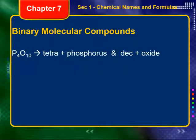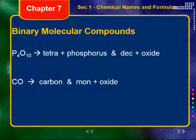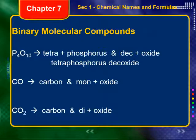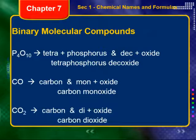For example, P4O10 — we have tetra meaning four, because there are four phosphorus atoms, and deca for the 10 oxygens. So that becomes tetraphosphorus decaoxide. For carbon, if there's only one of the first element, you don't say mono on the first one — that's the only time you don't say it. We have one oxide, so carbon monoxide. We only have one carbon, so we just don't say the mono. Carbon dioxide has two oxygens.